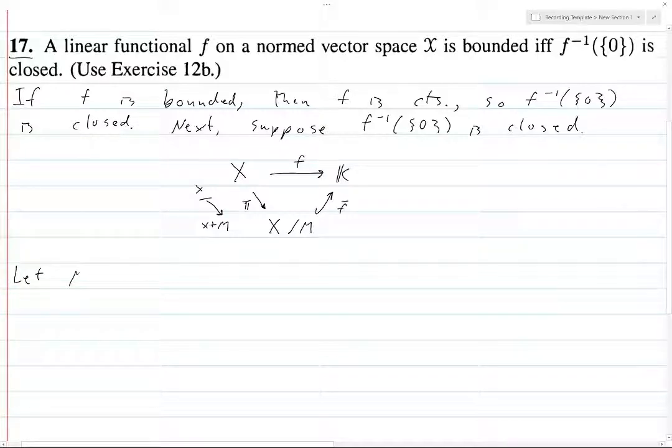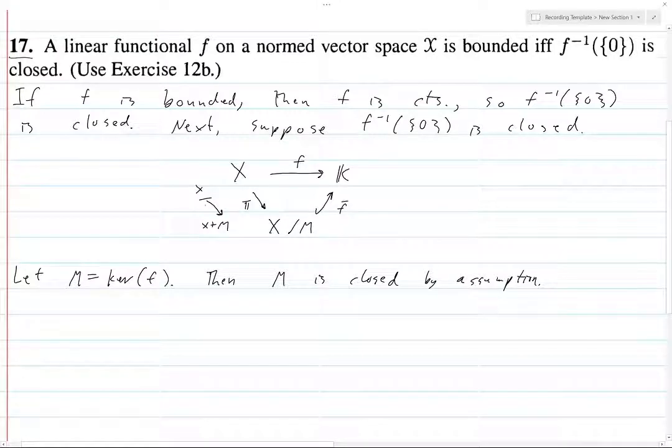Let m be the kernel of f, then m is closed by assumption. Because m is precisely f inverse of 0, since the kernel is all the things that map to 0.